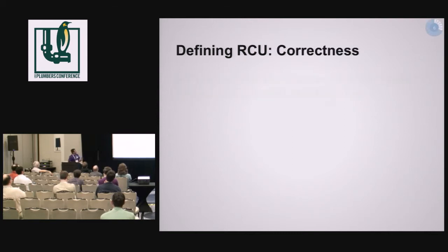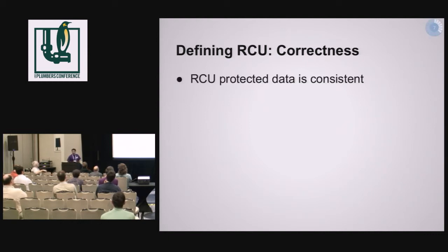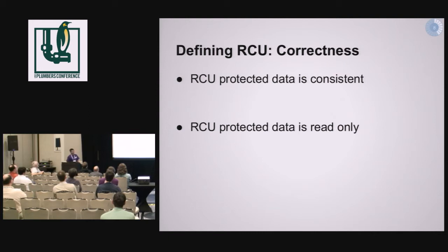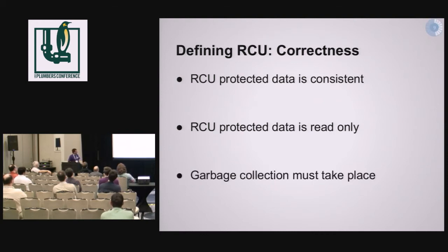That brings us to the next important bit: how do you define correctness for RCU? We came up with a set of invariants. First, RCU protected data is consistent. Second, it's read-only, because every time we update we make a copy, and nobody else is supposed to change these old versions. And finally, at some point there must be garbage collection, otherwise you're going to run out of memory.